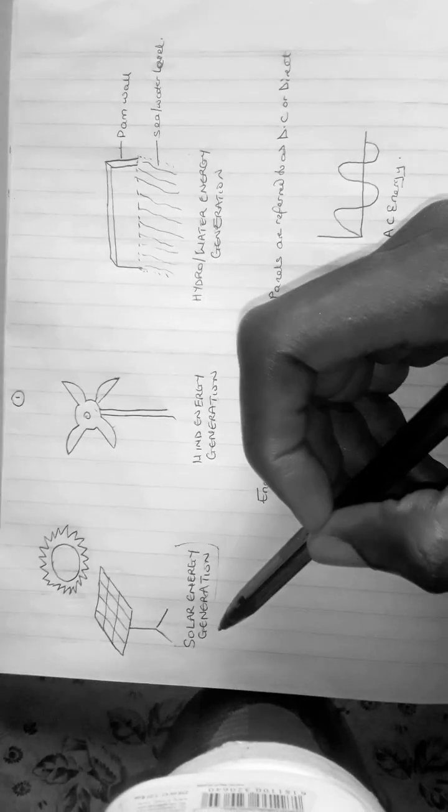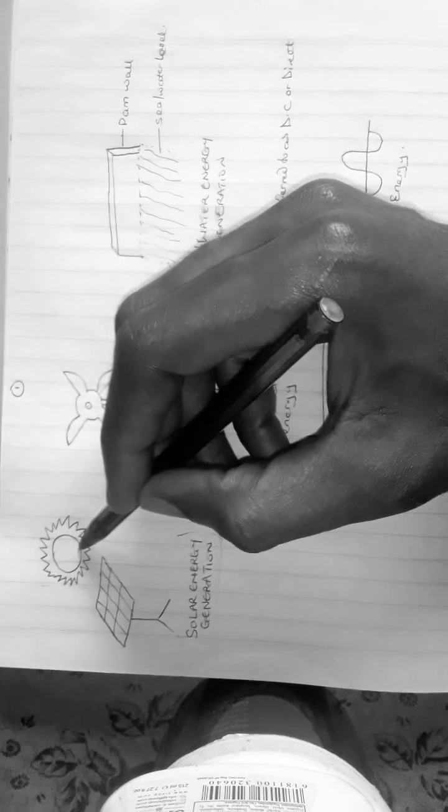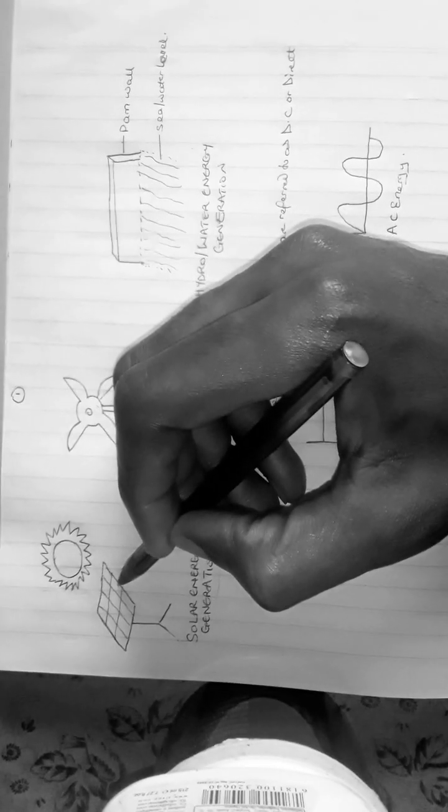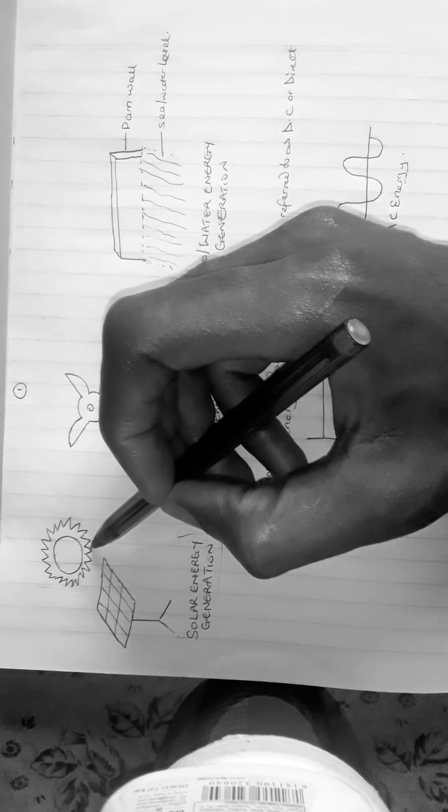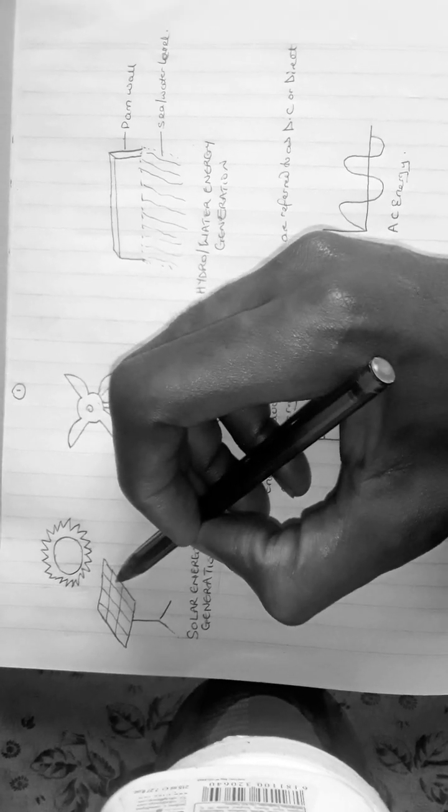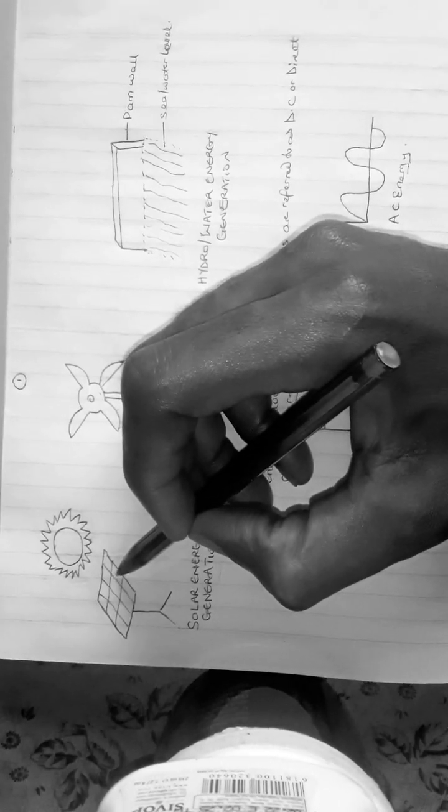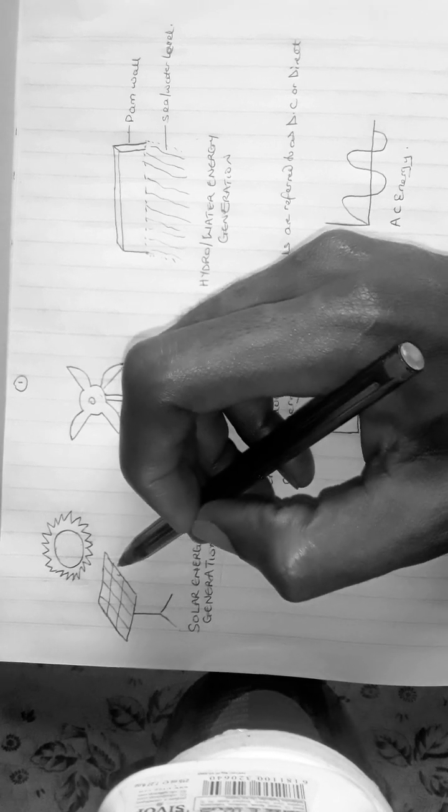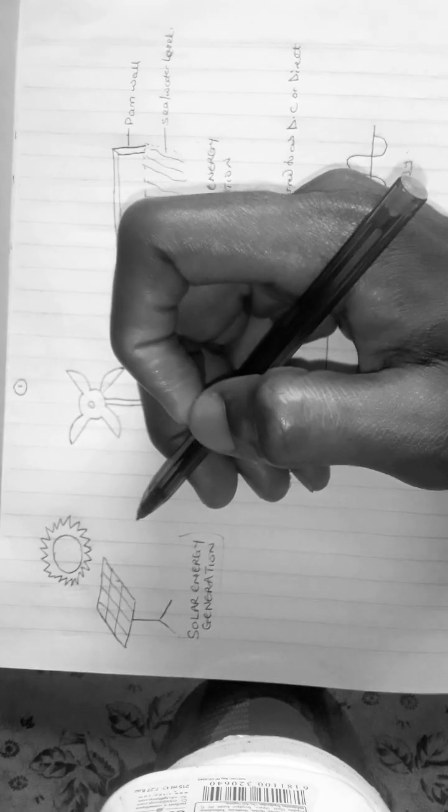Now the implication of this is our focus is mainly on solar energy generation for this class. So I'm going to show you how solar produces this electricity. Now when the sun strikes the panel, it causes electricity to flow, but then this energy that is going to flow...